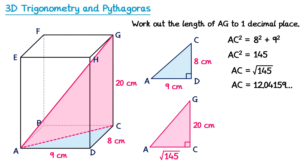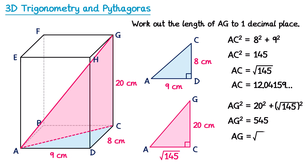Now we can find AG using Pythagoras on triangle ACG. AG² = 20² + (√145)² = 400 + 145 = 545. To find AG, square root both sides: AG = √545. Typing this into the calculator and rounding to one decimal place gives 23.3 centimetres.